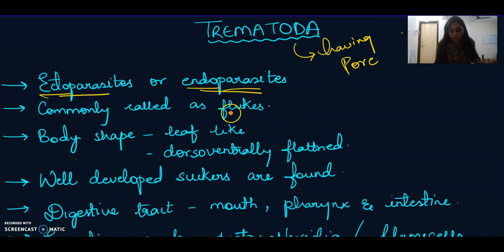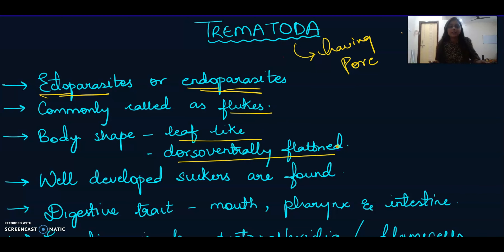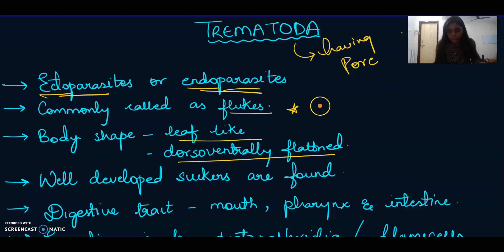Commonly these organisms are called flukes. Their body shape is leaf-like and they are dorsoventrally flattened — obviously, as members of Platyhelminthes, these organisms have to be dorsoventrally flattened. An important point about the body is that it is unsegmented, so these organisms have an unsegmented body.